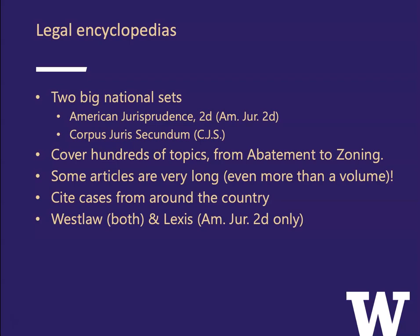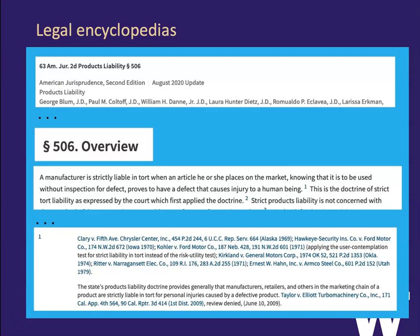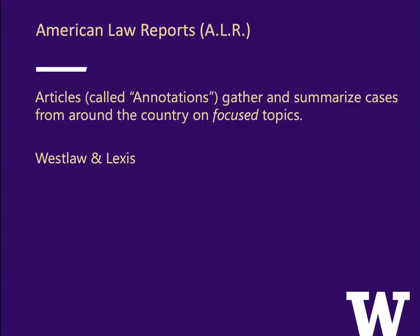Both AmJur and CJS are on Westlaw; Lexis also has AmJur but not CJS. Here's an example of some pieces from the products liability article in AmJur Second. They're giving us an overview of when a manufacturer is strictly liable. The text reads: 'A manufacturer is strictly liable in tort when an article he or she places on the market, knowing that it is to be used without inspection for defect, proves to have a defect that causes injury to a human being.' Footnote one then cites cases.